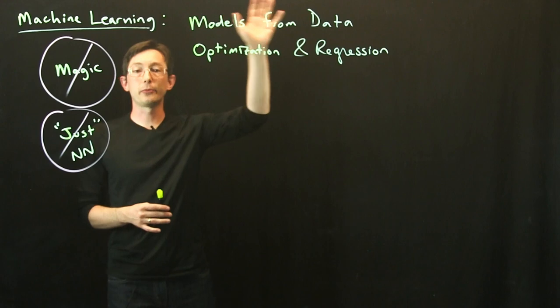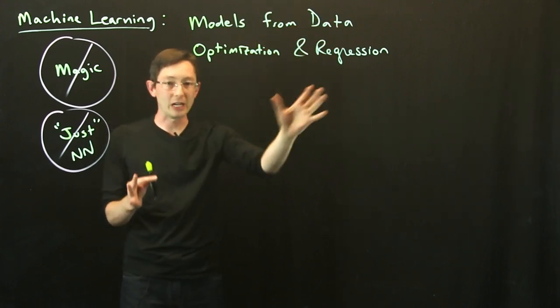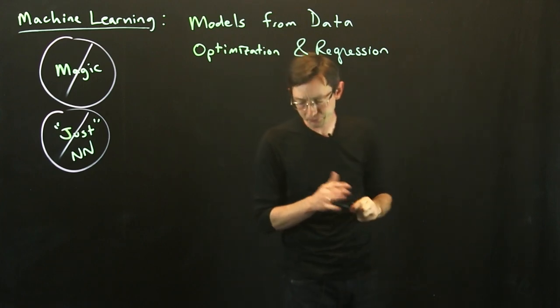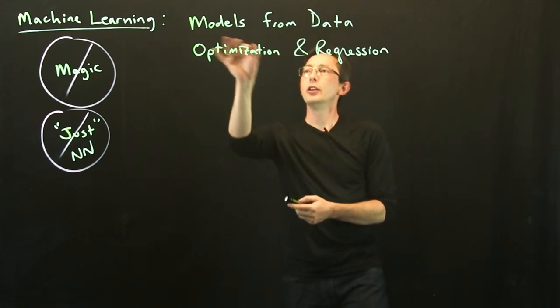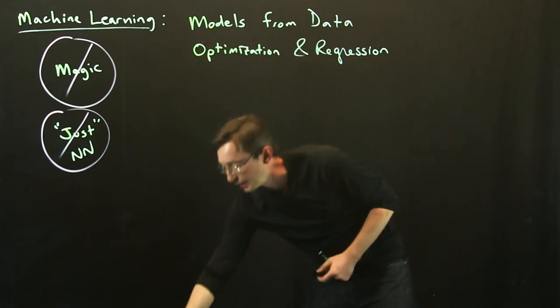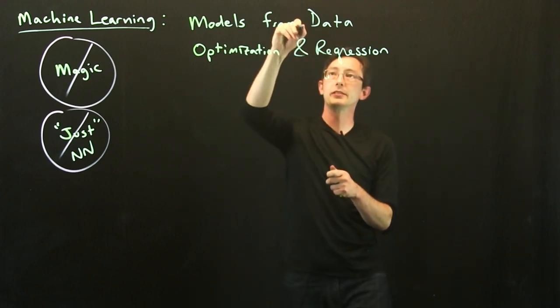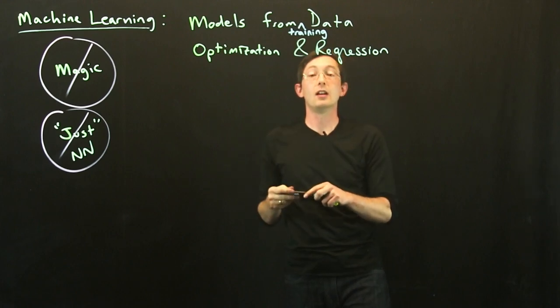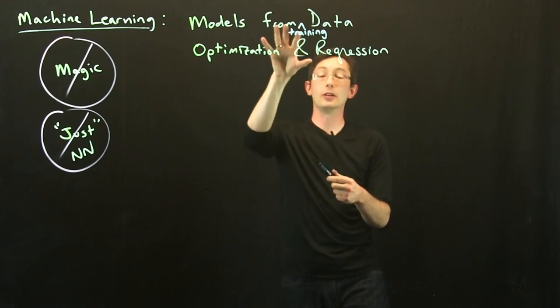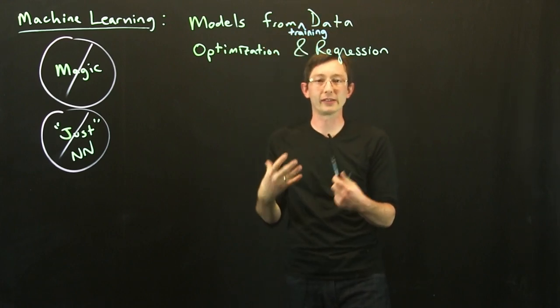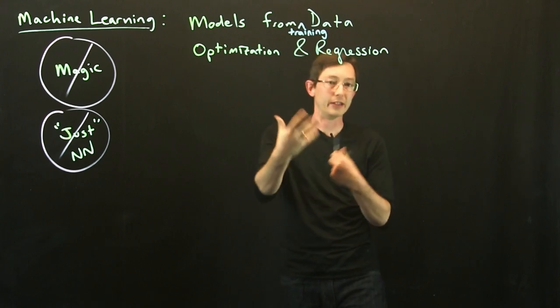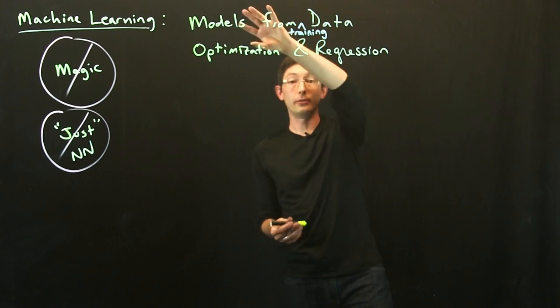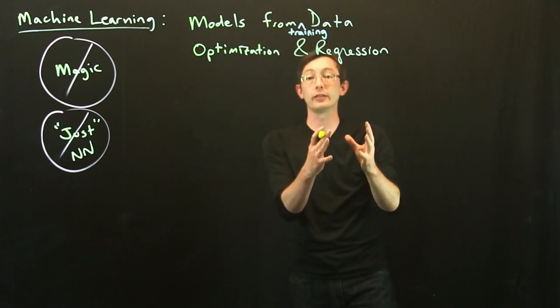We're talking about models that improve from data based on foundational mathematical techniques in linear algebra, optimization and regression. In general, you want these models to be developed, and oftentimes these are developed from training data. You have some data that you've collected and you're going to build a model for how that data behaves, what are the rules that govern the data you've collected. And what you hope is that that model generalizes to be useful in the future.